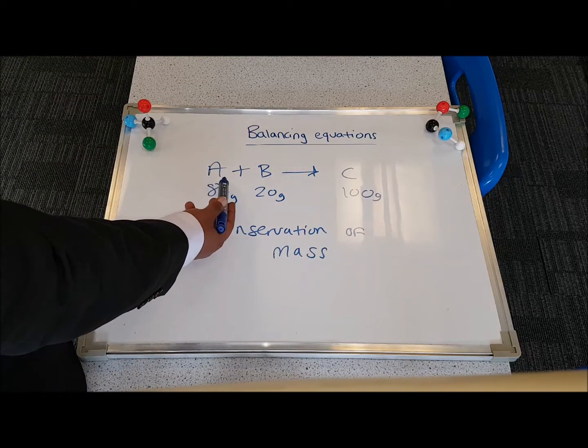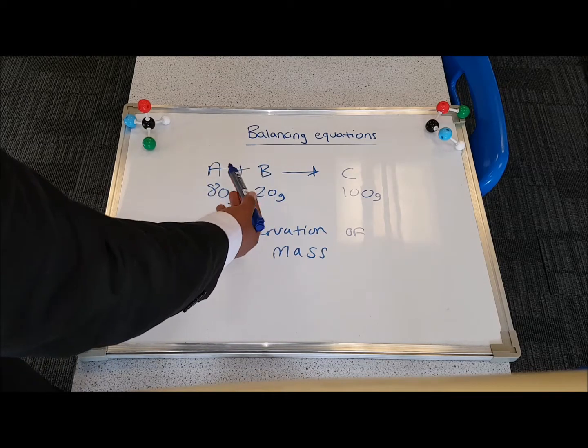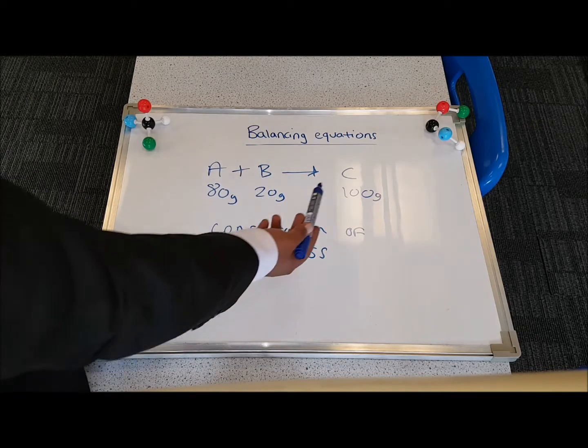So if you have a look, A is 80 grams, B is 20 grams. Together, on the left-hand side, they are 100 grams. We only have one product in this case, and that has to be 100 grams.